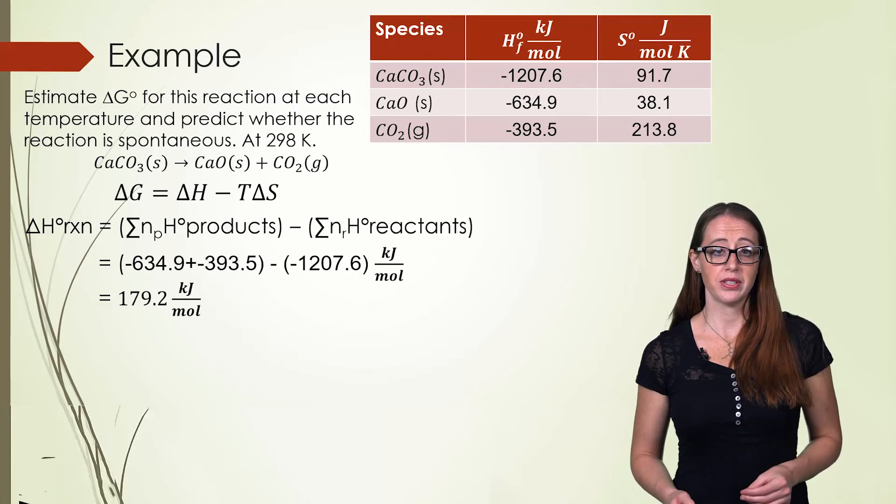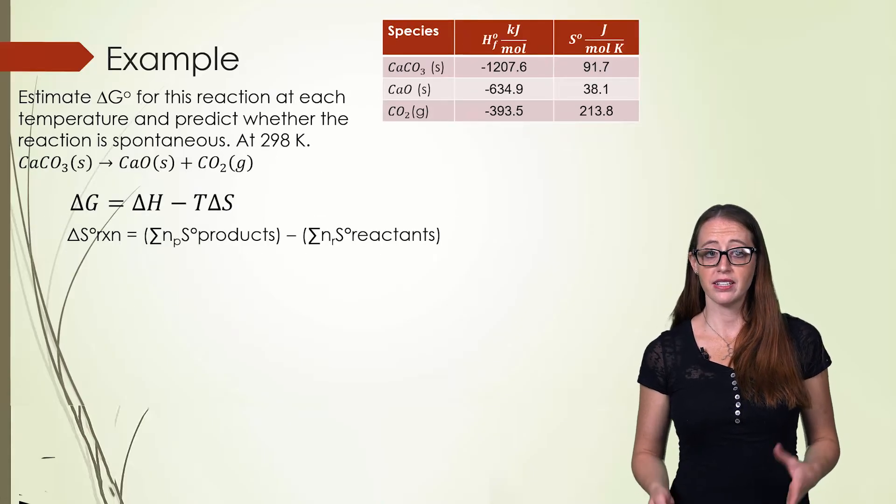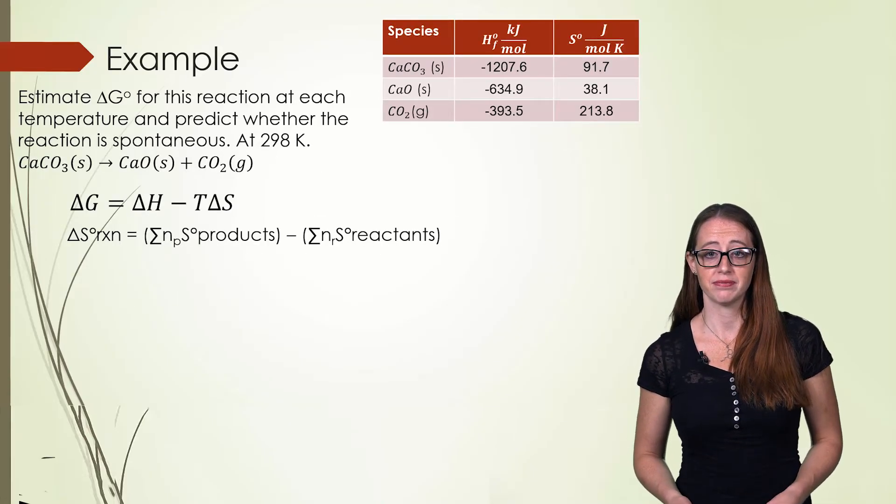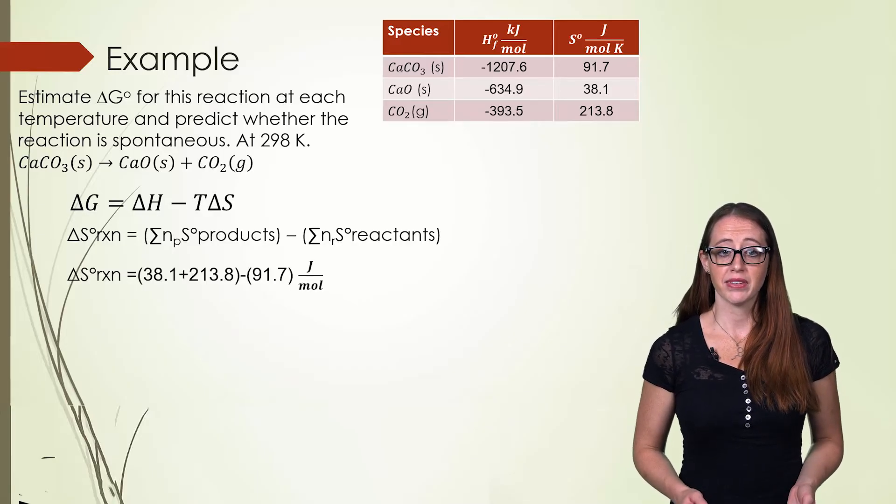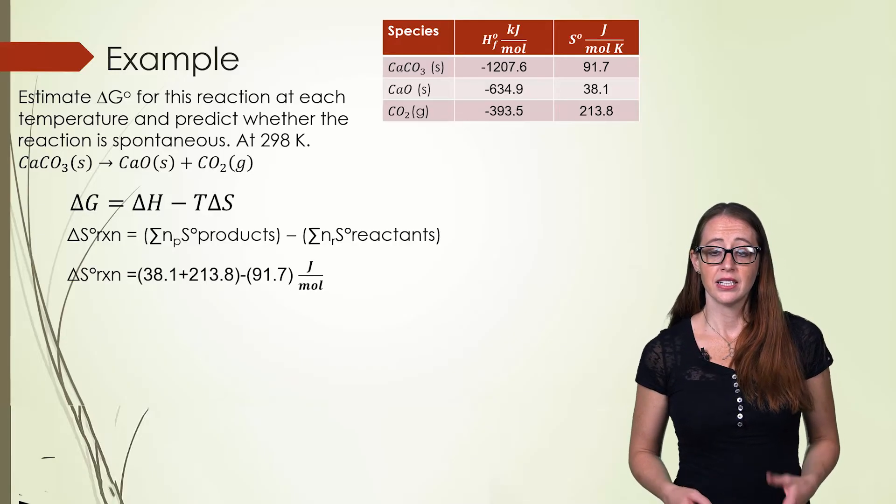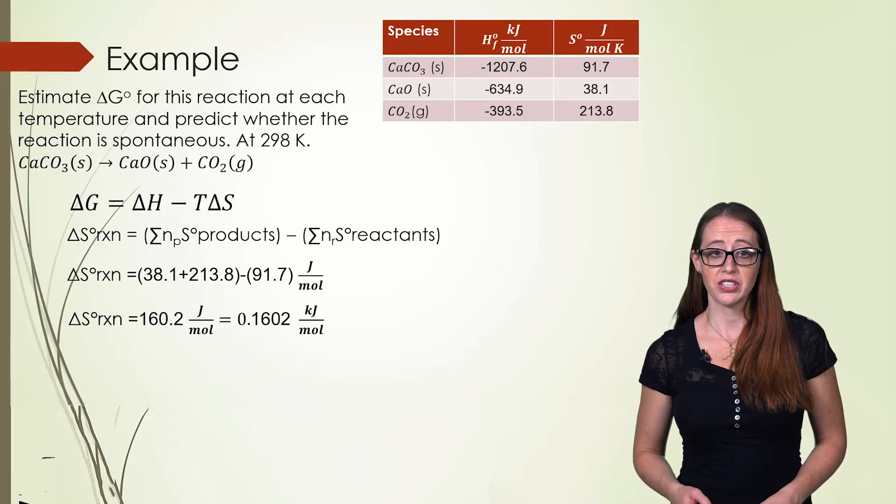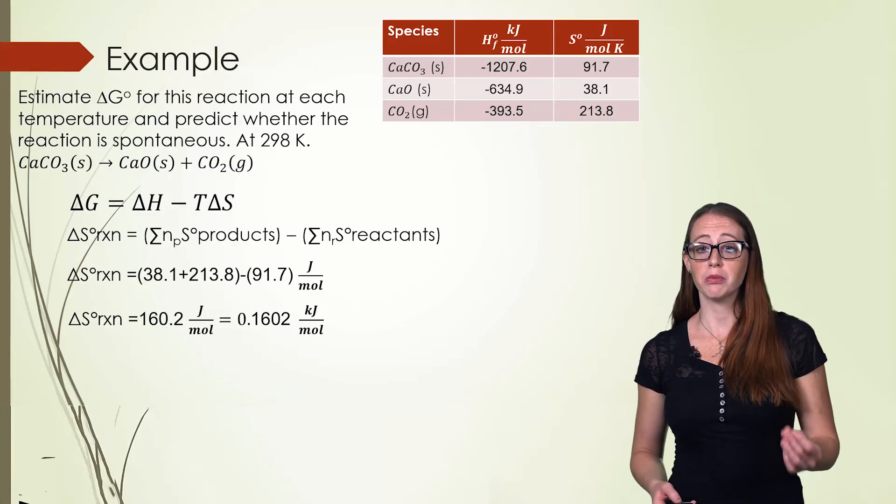Now let's do the entropy. If you haven't already, make sure you do this before moving on. Once again, we add up our products and add up our reactants. We put these together to get our answer of 160.2 joules per mole.